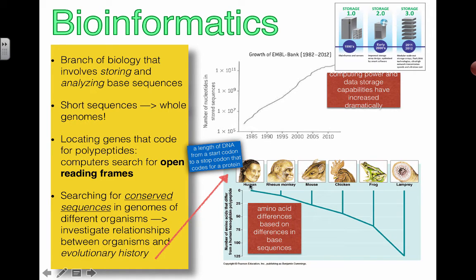So as we know, humans were probably more closely related to monkeys than we are to mice, and then more closely related to mice than we are to frogs. The reason is because we can understand and we can see the level of differences between the base sequences.